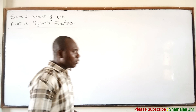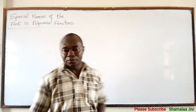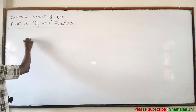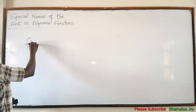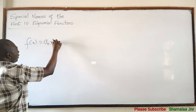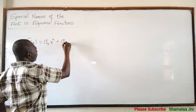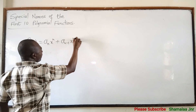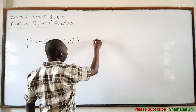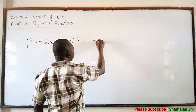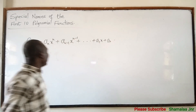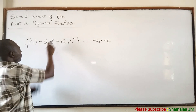First of all, what is a polynomial function? A polynomial function is any function of the form m of x equal to a_n x^n plus a_(n-1) x^(n-1) plus and so on plus a_1 x plus a_0, where n is a positive integer.